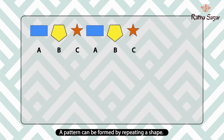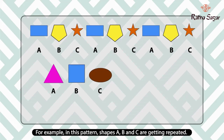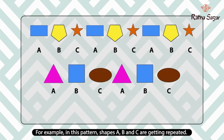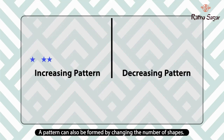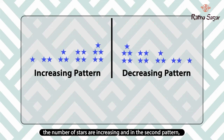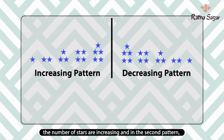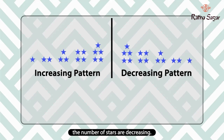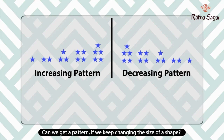A pattern can be formed by repeating a shape. For example, in this pattern, shapes A, B, and C are getting repeated. A pattern can also be formed by changing the number of shapes. For example, in the first pattern the number of stars is increasing, and in the second pattern the number of stars is decreasing.